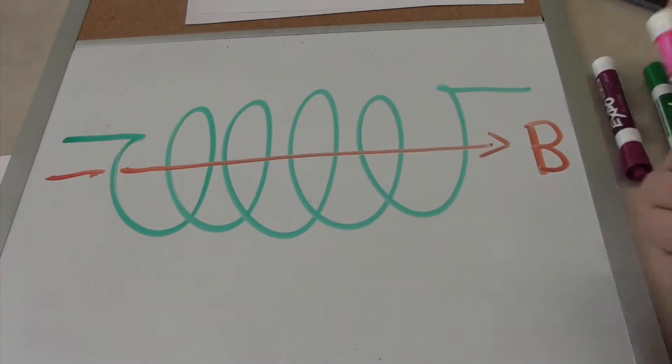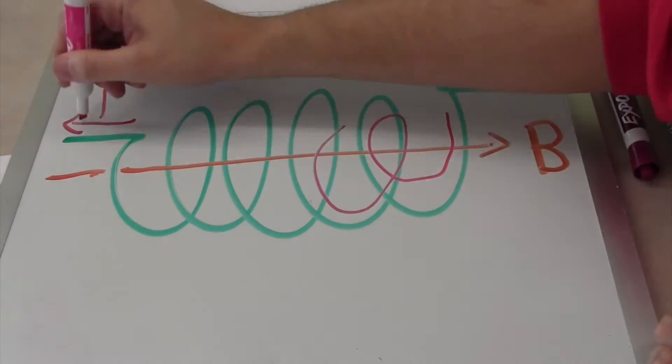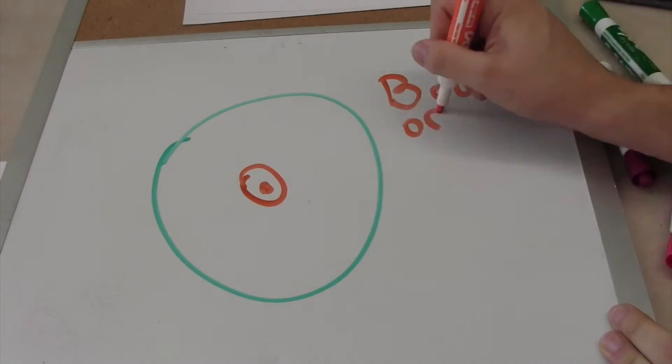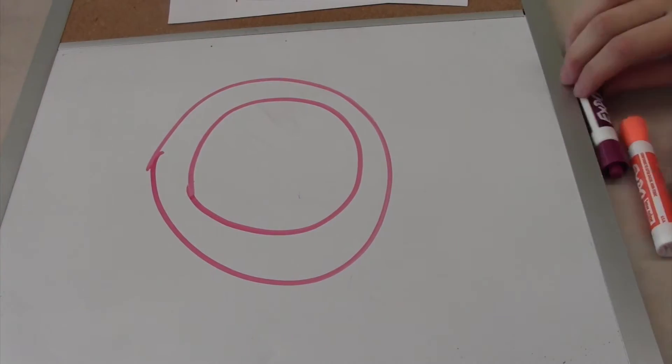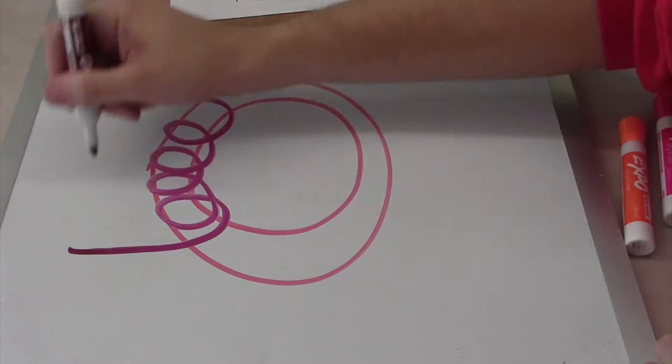But what happens if you put a magnetic field through a coil? We observe that a current gets induced in the coil. But is this true for any magnetic field? This was tested by 19th century physicist Michael Faraday.